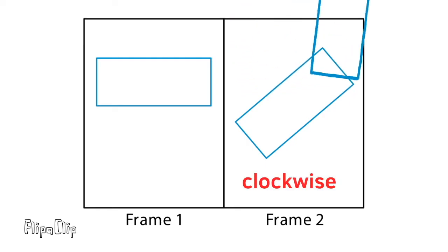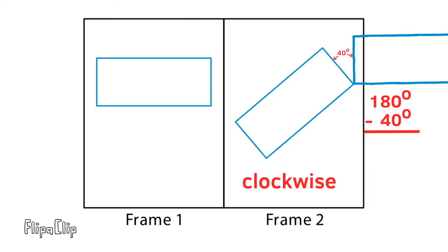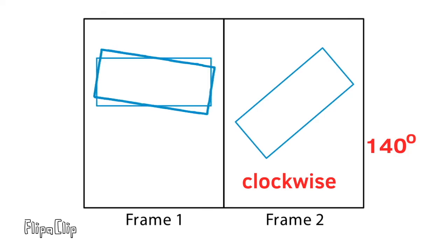In this example, I've rotated the rectangle 180 degrees a little bit too far, but if we back it up 40 degrees, it lines up perfectly. 180 degrees minus 40 degrees is 140 degrees. Here you can see the rotation of 140 degrees clockwise.